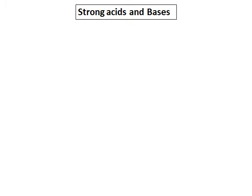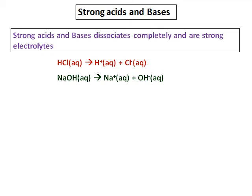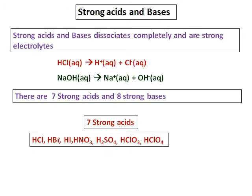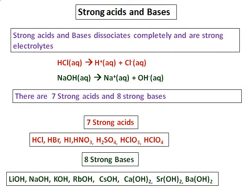Strong acids and strong bases dissociate completely and are strong electrolytes. For example, HCl gives all its H⁺ and Cl⁻ ions, and sodium hydroxide gives all its Na⁺ and OH⁻ ions. In general, there are seven strong acids — including HCl, HBr, and others listed — and eight strong bases, starting with lithium hydroxide and all group one metal hydroxides, along with calcium, strontium, and barium hydroxides. You do not need to memorize them now, but will need to later in the course.